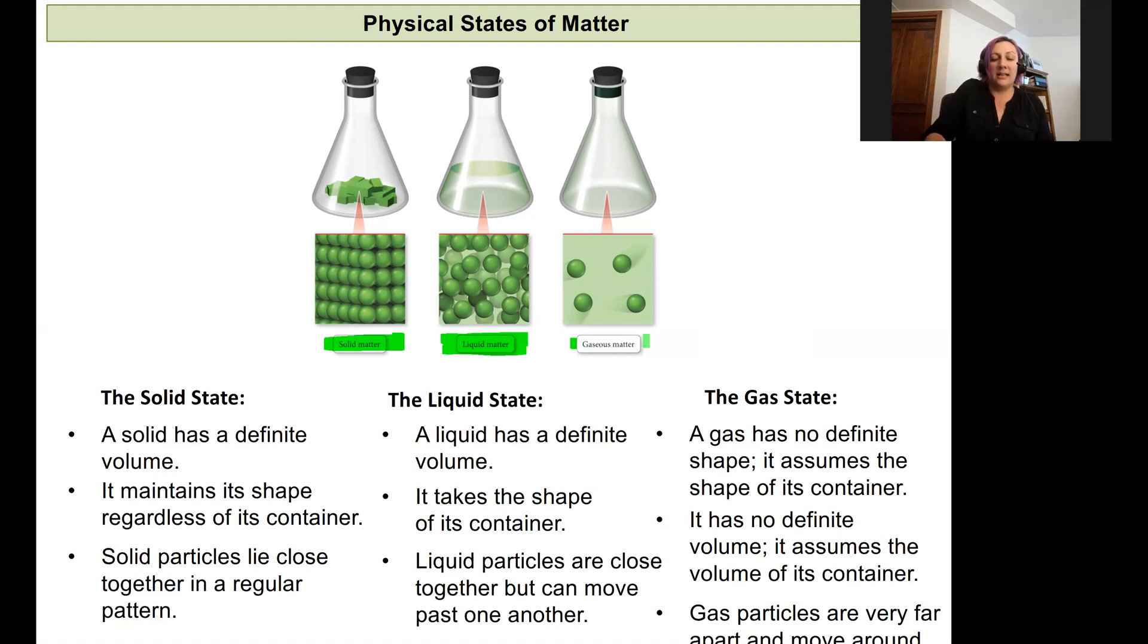If we go to the gaseous state of matter, then we have particles that are moving even faster and they won't have a definite shape or a definite volume. They'll just expand to take up whatever space you allow them. They'll occupy the entire container they're in. Those particles are really far apart from one another and they're interacting a lot less. These are our three main states of matter that we might observe a substance being.